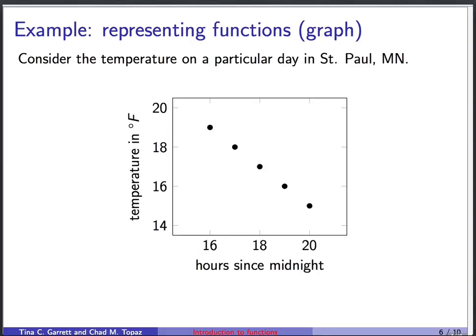Another way is to graph that data. We take the independent variable, hours since midnight, and plot that on the horizontal axis. We take the dependent variable, temperature in degrees Fahrenheit, and we plot that on the vertical axis, and we get this set of points here. And this graph is another way of representing that function. We might even sometimes look at these and say, those kind of look like they lie along a straight line. So let's imagine some kind of curve or line going through those points. And that's another way of thinking about this as a function.